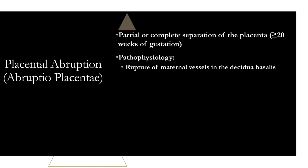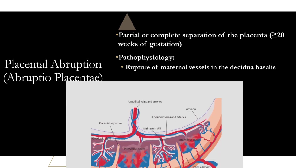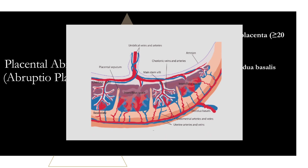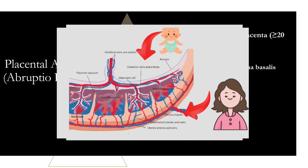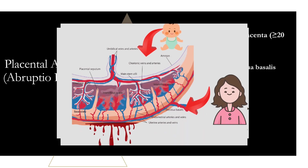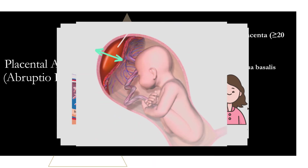Placental abruption is due to a rupture of the maternal vessels in the decidua basalis — that's the main pathophysiology to focus on. Thrombin also plays a role in clinical consequences like contractions and tissue breakdown. Quick anatomy review: the placenta has two sides — the baby side called the chorion, and the mother side, the decidua basalis, which is attached to the uterine wall. The decidua basalis contains maternal blood vessels supplying oxygen-rich blood to the fetus. When these vessels rupture, significant bleeding occurs, causing a hematoma that pushes the uterine wall and placenta apart.